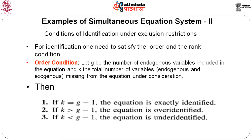The condition of identification is broadly classified as rank condition and order condition. For the order condition, let g be the number of endogenous variables included in the equation and k is the total number of variables missing from the equation under consideration. If k equals g minus 1, the equation is exactly identified; if k is greater than g minus 1, it is over-identified; and if k is less than g minus 1, the equation is under-identified.